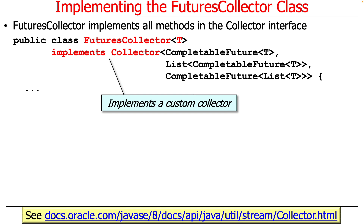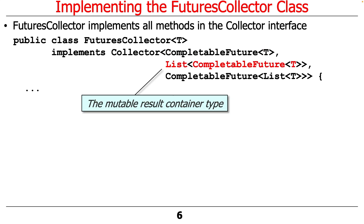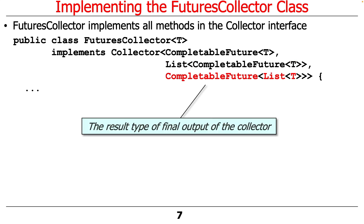The first parameter denotes the type of input elements in the stream, which is a stream of CompletableFutures of type T. The mutable result container type is a list of CompletableFutures of type T — that's what gets stored internally as it's collecting and accumulating the results. Finally, the result type returned from the finisher is a CompletableFuture to a list of T.